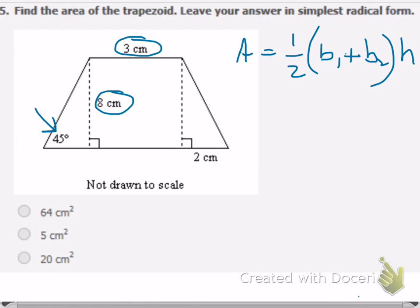We know that 45-45-90 right triangles are isosceles, so because this side is eight centimeters, this little piece is also eight centimeters. That means this piece is three centimeters because it's opposite. This is a rectangle that we're playing with here, and opposite sides of a rectangle are congruent.